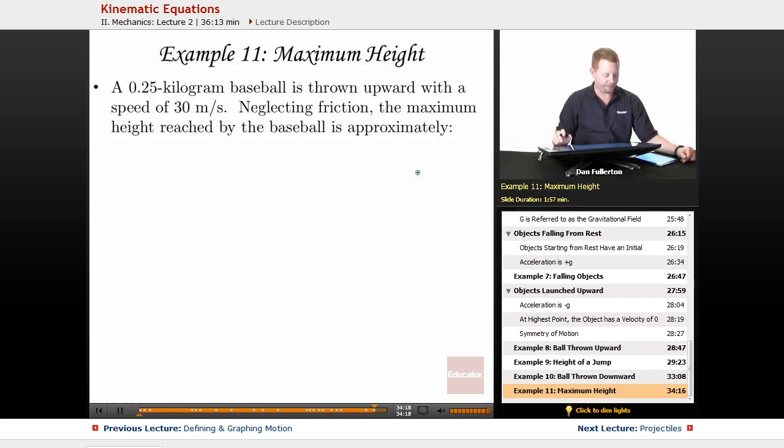Last sample problem just to make sure we've got it. Find the maximum height. A quarter kilogram baseball is thrown upward with an initial speed of 30 meters per second. Neglecting friction, no air resistance, the maximum height reached by the baseball is approximately what?